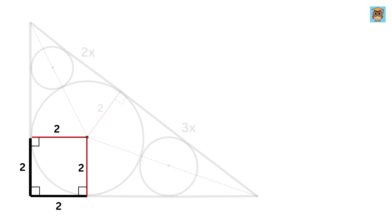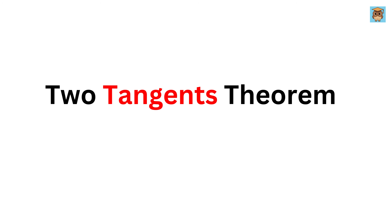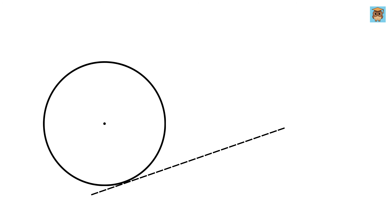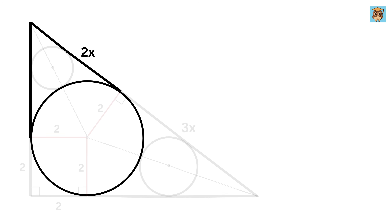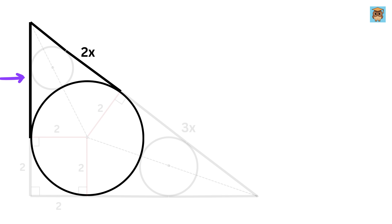Next, we will learn about the two tangents theorem. If two tangents are drawn to a circle from a single external point, then these tangents will always be equal in length. Consider the big circle and these two tangents — they are drawn from the same external point, which is this vertex. Hence, if this is 2x, then the length of this piece will also be equal to 2x.